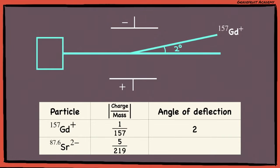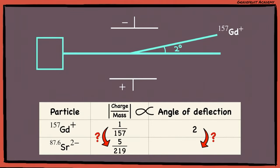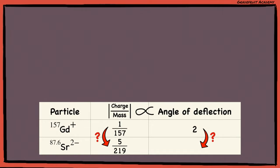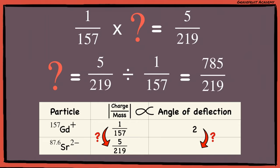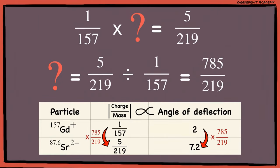Since the angle of deflection is directly proportional to the charge-to-mass ratio, when the charge-to-mass ratio is multiplied by a certain value, the angle of deflection will also be multiplied by the same value. To find this value, we divide 5/219 by 1/157, which gives 785/219. Hence, the angle of deflection for strontium ions will be 2 multiplied by 785/219, which gives 7.2 degrees corrected to 1 decimal place.